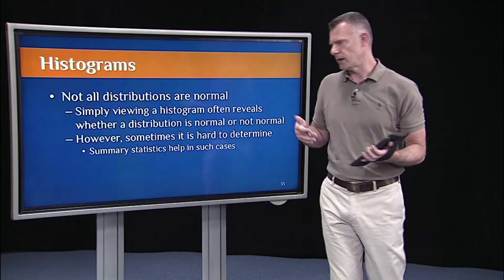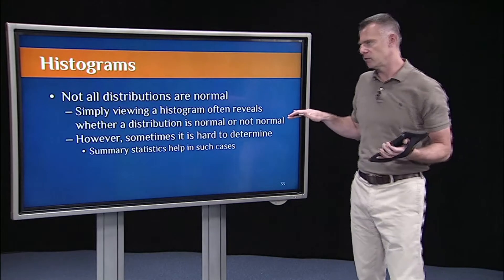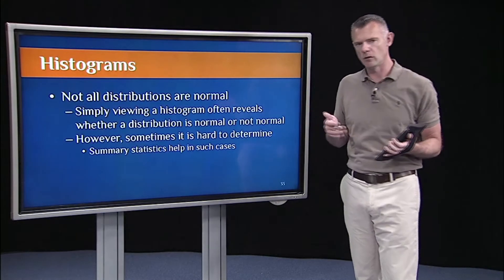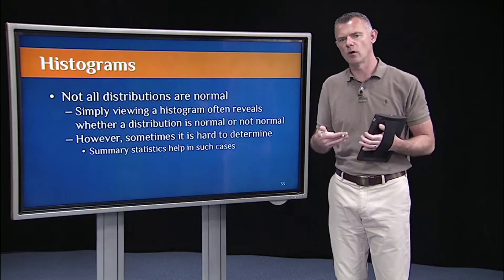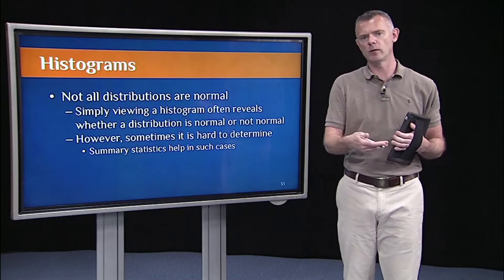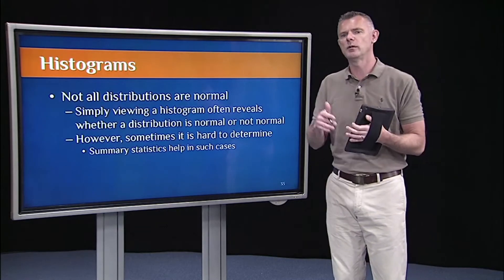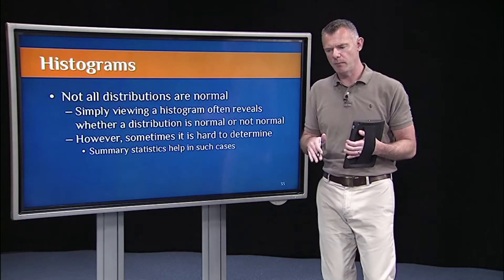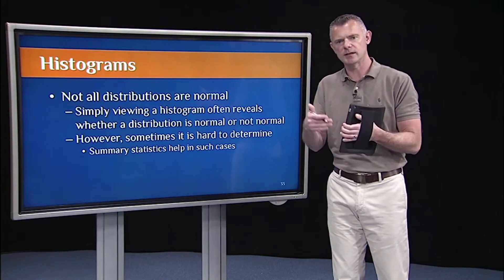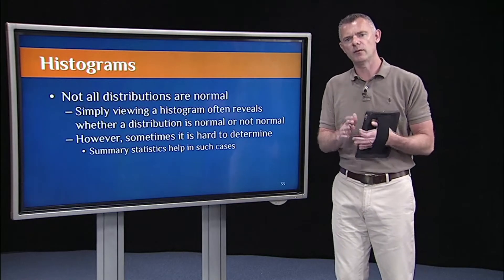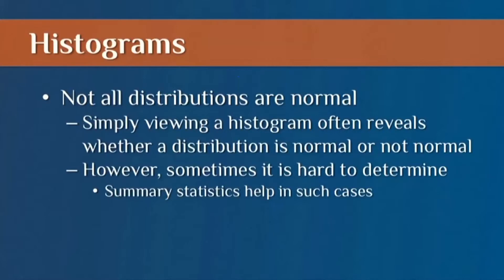So the point of that exercise and the point of looking at all those histograms is to just make this simple point that not all distributions are normal. Yes, we are going to assume a lot of normal distributions as we go forward in this course. It's easy, especially for introductory statistics, to assume a normal distribution. But we'll make that assumption, then we'll test it by looking at histograms, by running descriptive statistics in R. We'll see if we have normal distributions or not. So we'll assume normal distributions. But just keep in mind, not all distributions are normal.